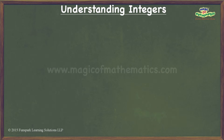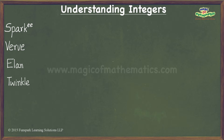I will explore the world of integers through an example. Let us consider a bright kingdom called Sparky Land. The citizens of this land are called Sparkies and the currency unit of this kingdom is called Spark. Our example will involve five Sparkies namely Verve, Elan, Twinkle, Zest, and Panache.